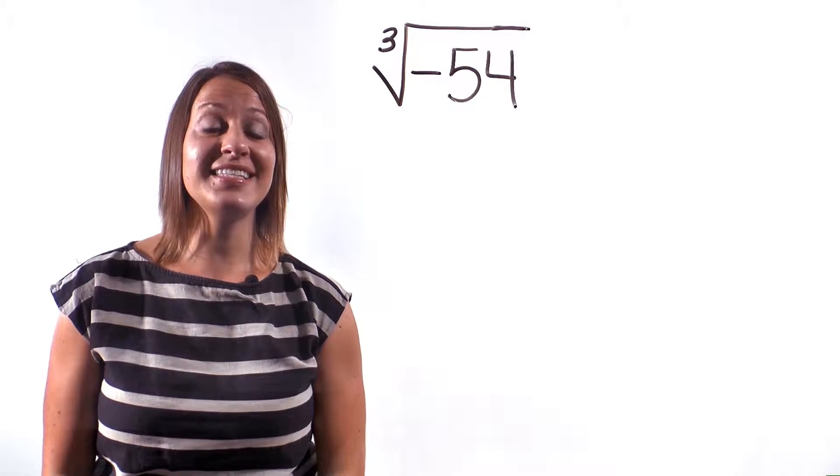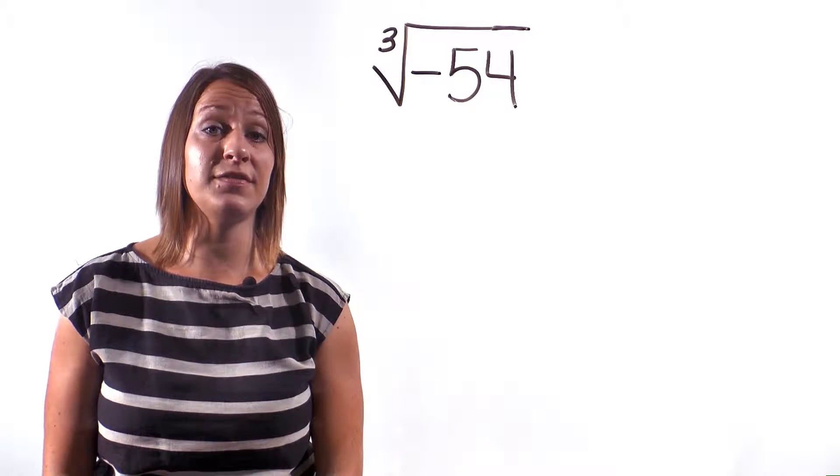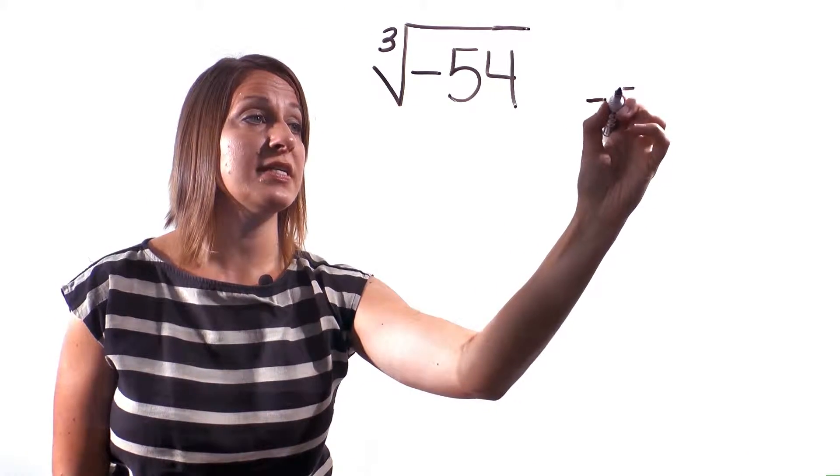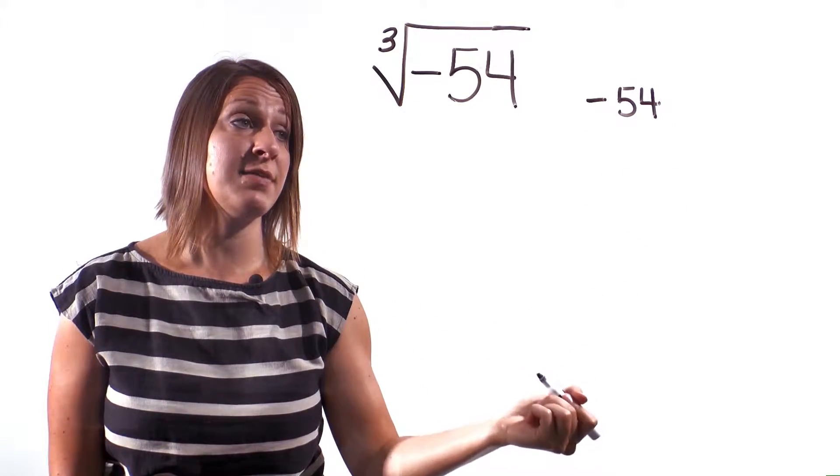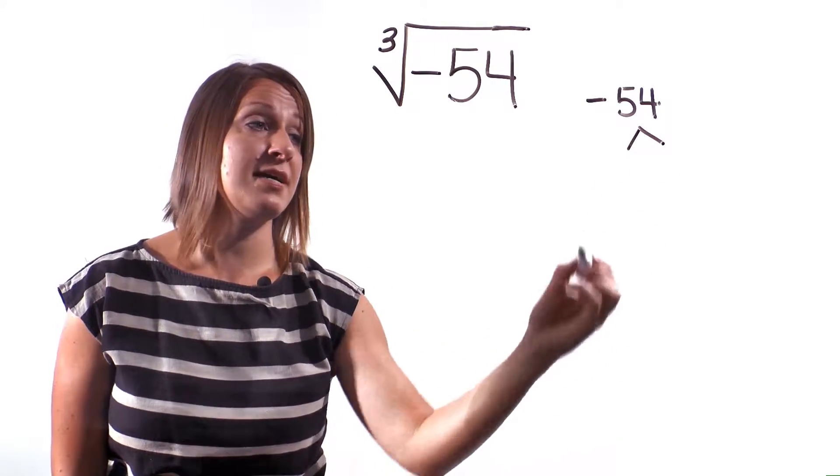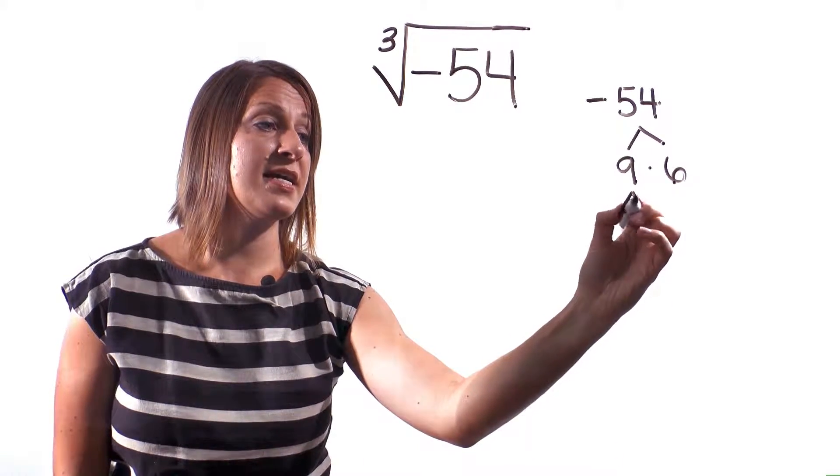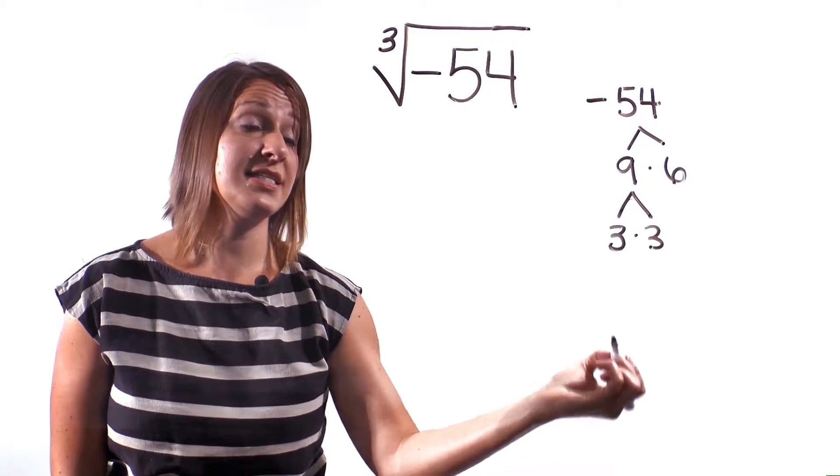Okay, let's take a look at another example. This is the cubed root of negative 54. Let's first bring negative 54 over here to the side and make a factor tree. 9 times 6. And then 9 is 3 times 3. And 6 is 3 times 2.